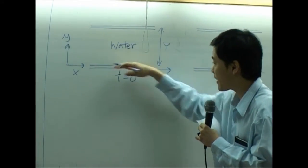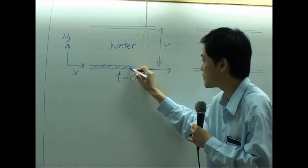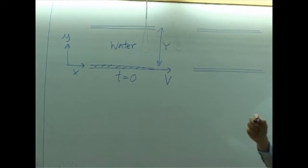If you pull this plate, this is a plate, a solid plate, with constant velocity V, what should happen?